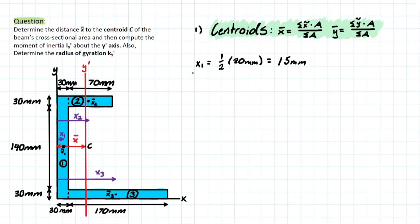Then moving on to X2, we have a similar thing, except first we need to consider this 30 mil distance away from the Y axis and then half of this 70 mil distance to get that total distance away from X2 to the Y axis. So pretty much what that's going to look like is we have 30 mil plus one half of that 70 mil, which is going to equal 65 millimeters.